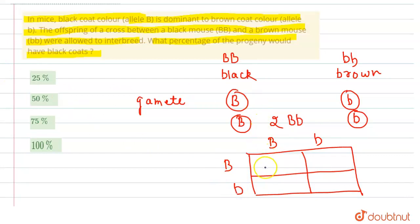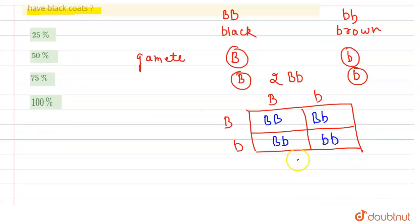cross them and we will see that we get BB here, Bb here, Bb here, and bb here. So here we get the ratio: